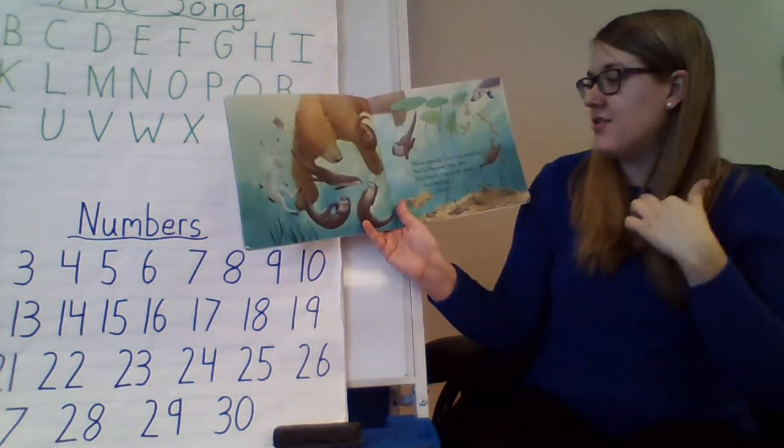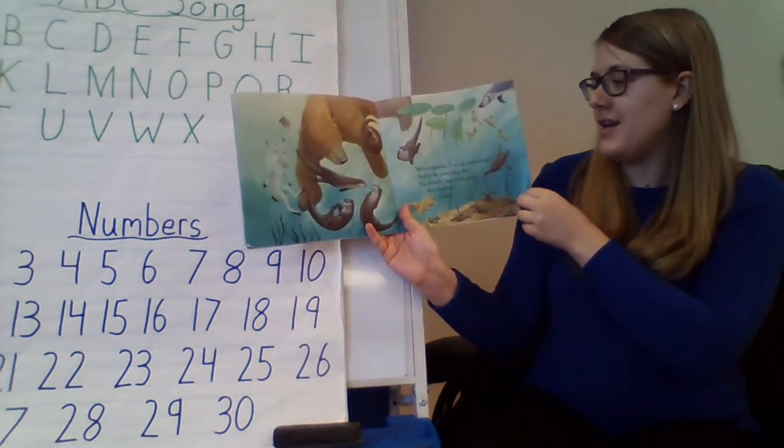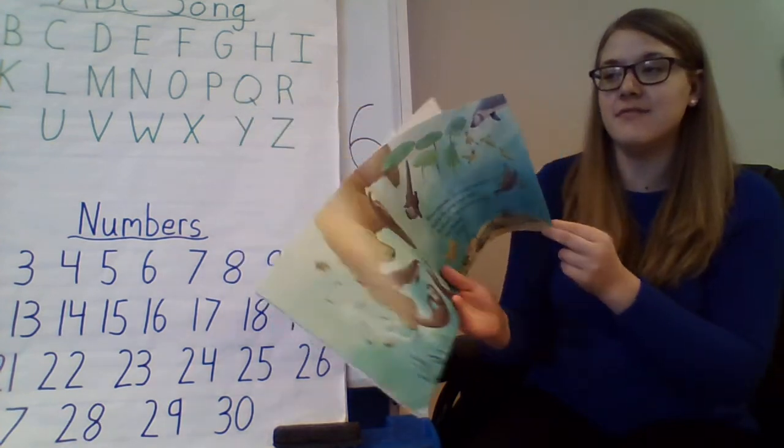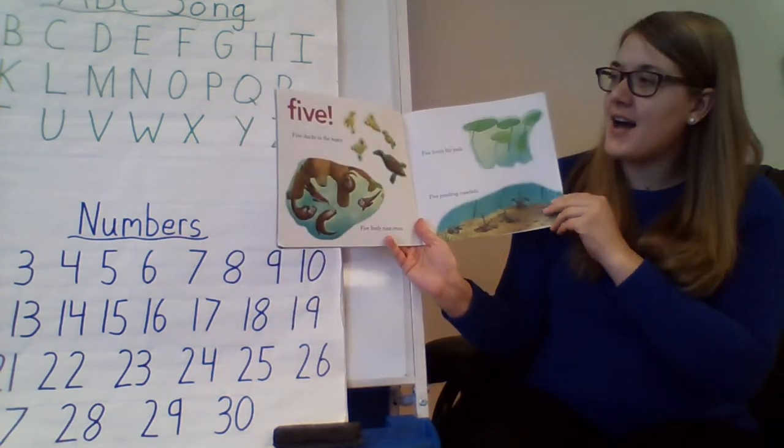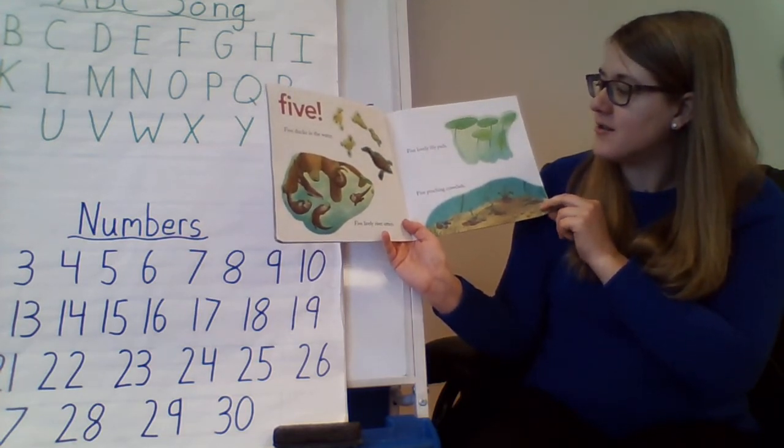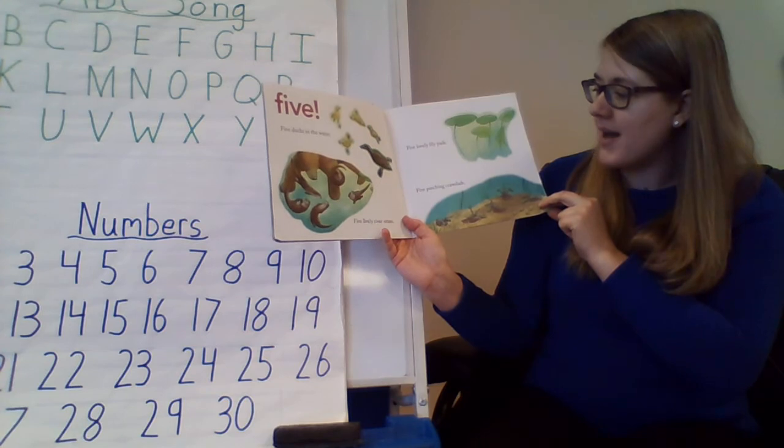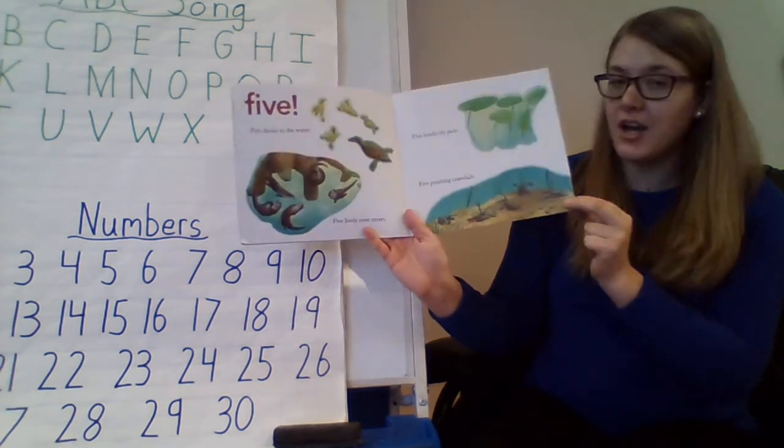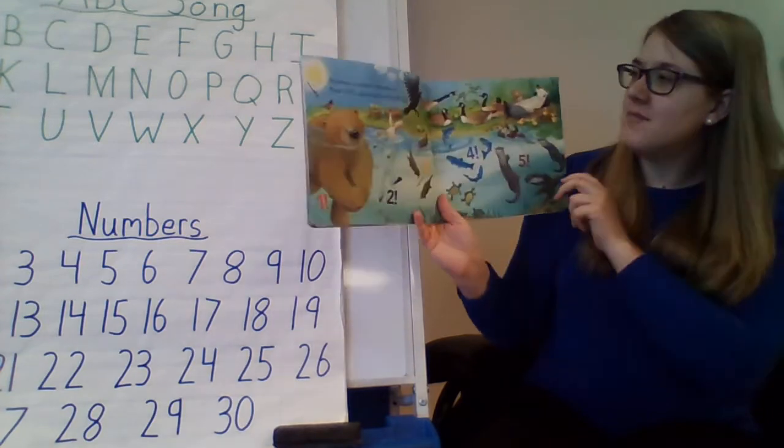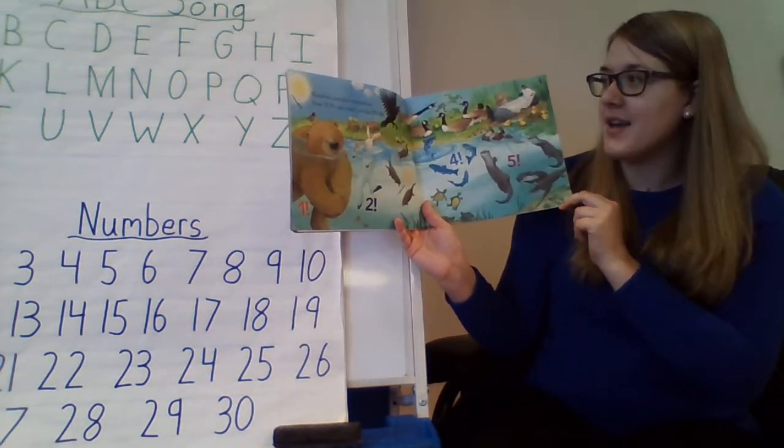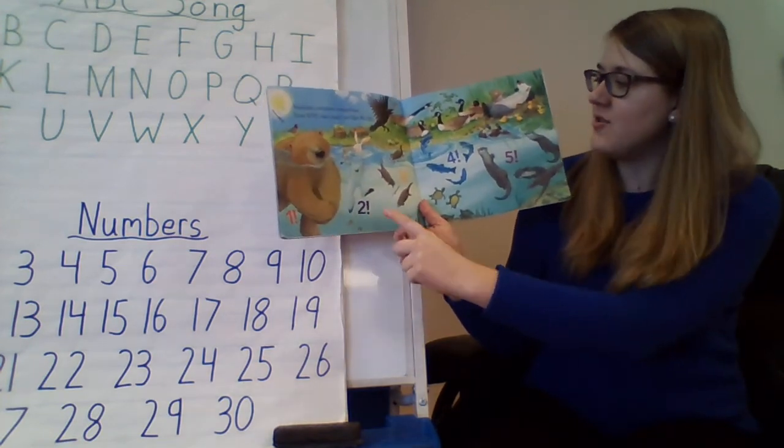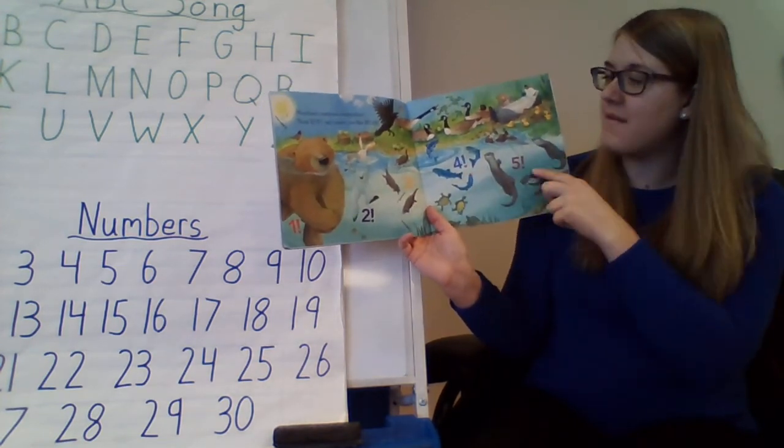Mouse squeaks, let's go swimming, and in the pond they dive. The friends float in the pond, and the bear counts five. Five ducks in the water, five lively river otters, five lovely lily pads, five pinching crawdads. Numbers, numbers everywhere. Now you can count just like Bear. One, two, three, four, five.